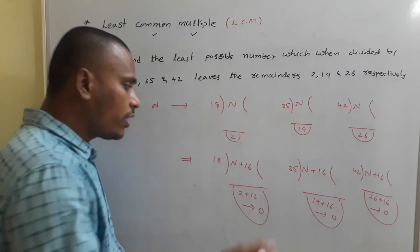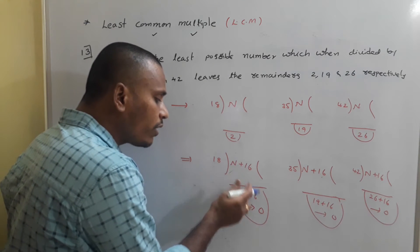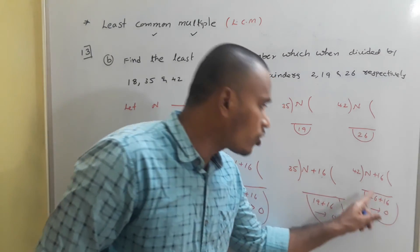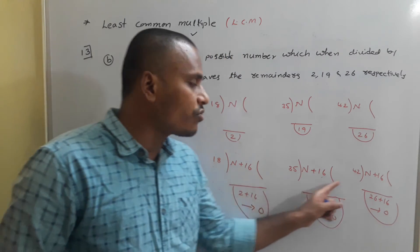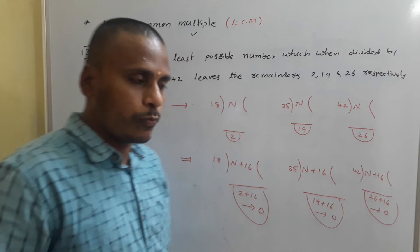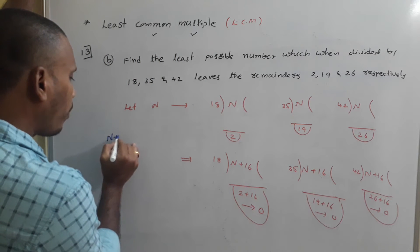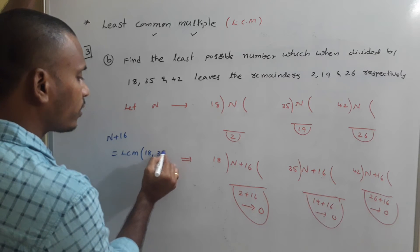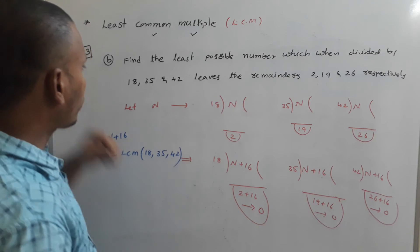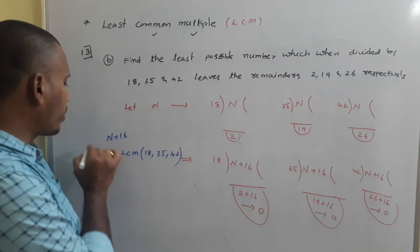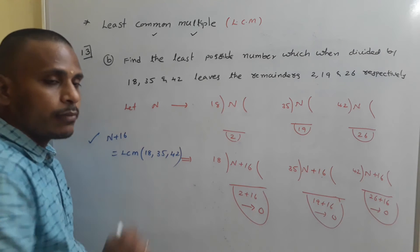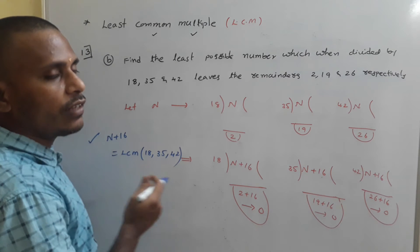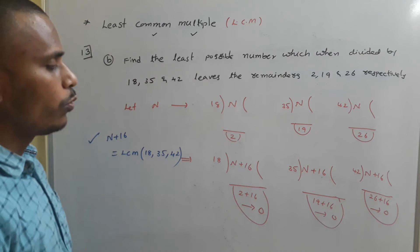So N + 16 leaves remainder 0 when divided by 18, by 35, and by 42. This is just like the previous standard problem, so N + 16 = LCM(18, 35, 42). Find the LCM of these three numbers, then N + 16 gives us the LCM value, and from that we find N.